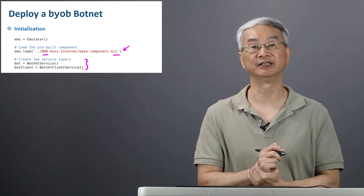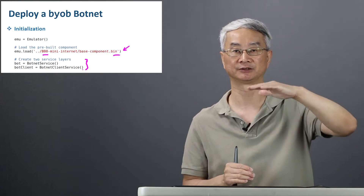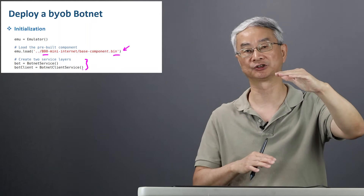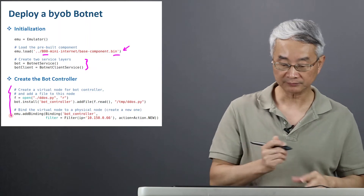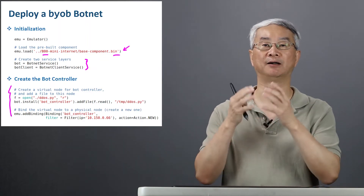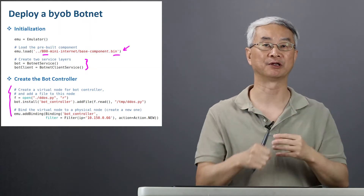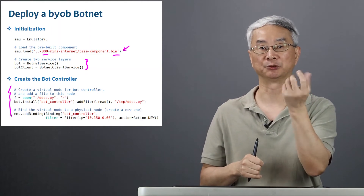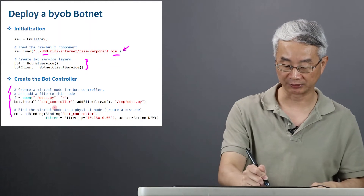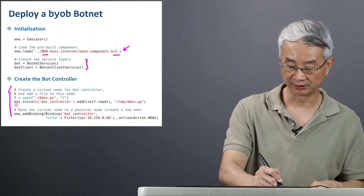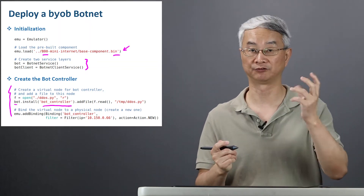After that, I'm just going to create the botnet service. Remember, we are actually building things on layers, so we have the botnet service and the client service — they are just two different layers. Now first, I'm going to create a botnet controller, and this is probably the most important part of the botnet. The controller is just a node, so I'm going to create this virtual node called a bot controller.